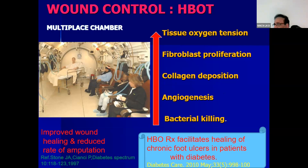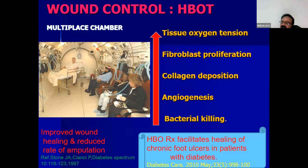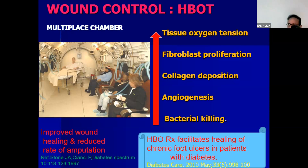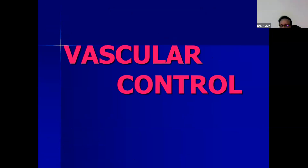HBOT is effective in vascular ulcers — when there is impending gangrene or gas gangrene, and in graft failure. However, it is not very effective in purely neuropathic ulcers. Many doctors refer neuropathic ulcer patients for HBOT unnecessarily, and patients are paying a lot of money. In my opinion, there is no role for HBOT in neuropathic ulcers, but definitely in vascular or pre-gangrenous ulcers and gas gangrene cases it can be advised.